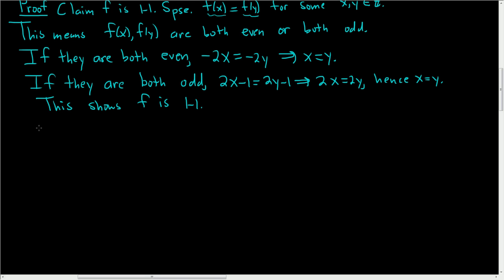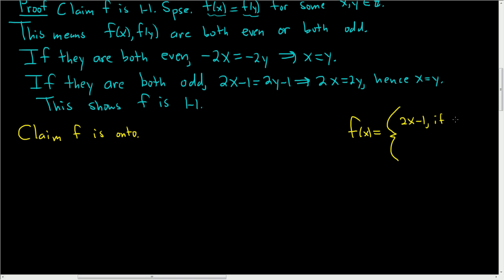For the next part, we're going to show that it's onto. Claim: f is onto — in other words, it's a surjection. The function is f(x) equals 2x minus 1 if x is positive, and negative 2x if x is less than or equal to 0.